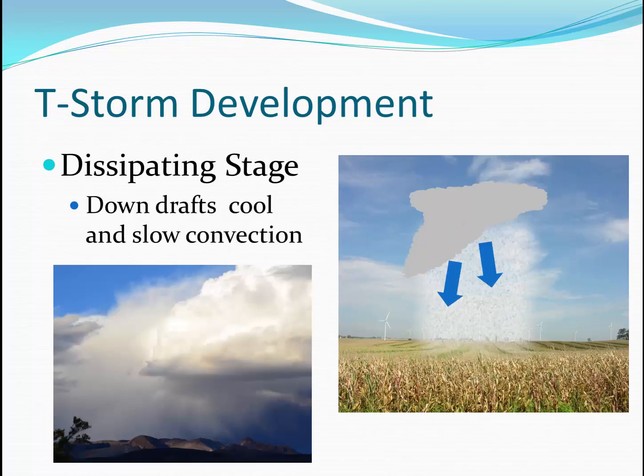Eventually, for a typical thunderstorm, it will dissipate rather quickly. The strong downdrafts created by the falling rain cut off the warm updraft. Essentially, the storm will cut off its fuel source and it quickly dissipates. Here we see a dissipating storm over the mountains near Death Valley, California.